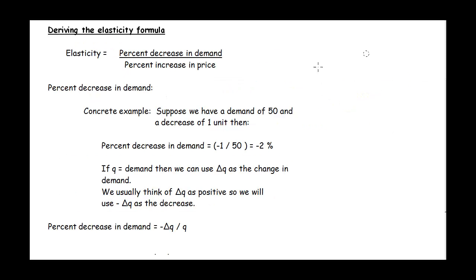Let's derive the elasticity formula. Our elasticity is the ratio of the percent decrease in demand to the percent increase in price. It's easiest to see how this works with a concrete example. Suppose we have a demand of 50 units, and then a decrease of 1 unit. The percent decrease in demand is that decrease of 1 unit over the original demand of 50, which gives a percent decrease of negative 2%. If we use Q for demand and delta Q for the change in demand, then delta Q divided by Q is our percent decrease in demand.